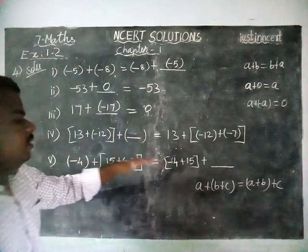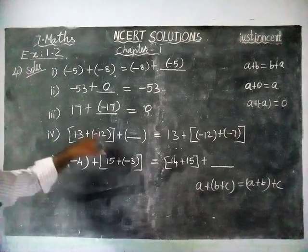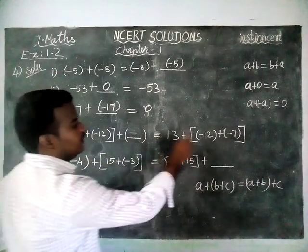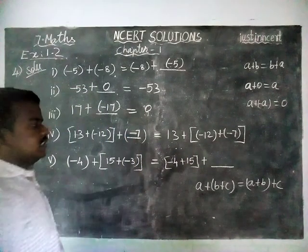So by using associative property, we are going to solve this sum. And this is A, this is B, this is C. And here A, B and C. So C value we are going to write here, minus 7.